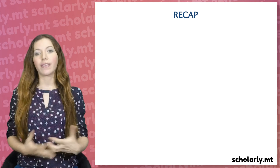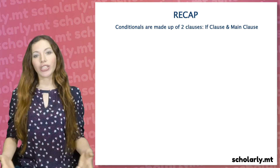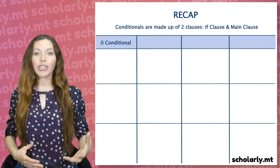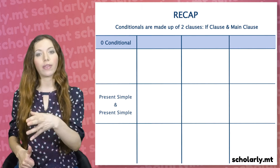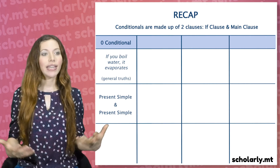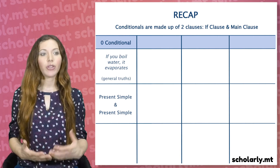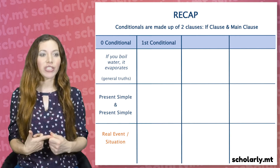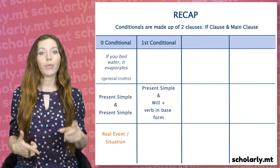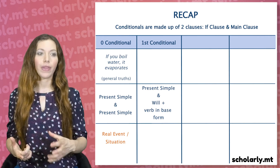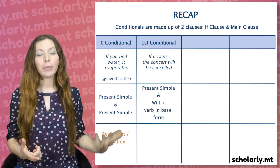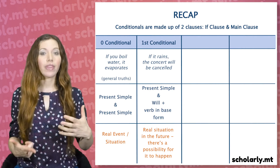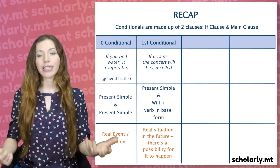Let's recap the main points discussed in this lesson. Conditionals are made up of two clauses: the if clause and the main or result clause. The zero conditional uses the present simple in both the if clause and the main clause — 'If you boil water, it evaporates' — a general truth. We use the zero conditional with real events, truths, and situations. The first conditional uses the present simple in the if clause and 'will' plus the base verb in the main clause — 'If it rains, the concert will be cancelled' — used to talk about a real, possible situation in the future.